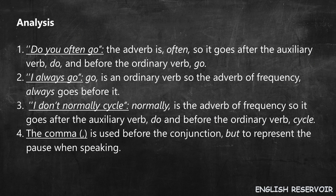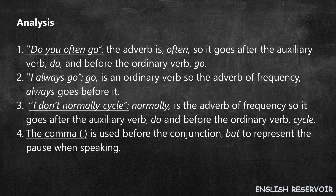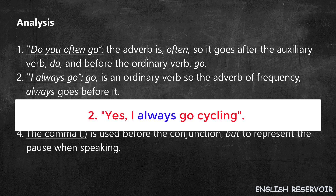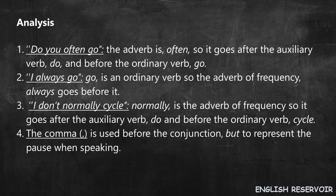Analysis. One: 'Do you often go?' The adverb is 'often', so it goes after the auxiliary verb 'do' and before the ordinary verb 'go'. Two: 'I always go.' 'Go' is an ordinary verb, so the adverb of frequency 'always' goes before it. Three: 'I don't normally cycle.' 'Normally' is the adverb of frequency, so it goes after the auxiliary verb 'do' and before the ordinary verb 'cycle'.